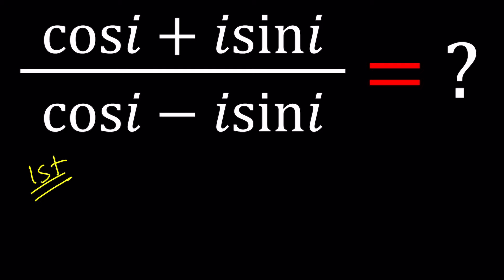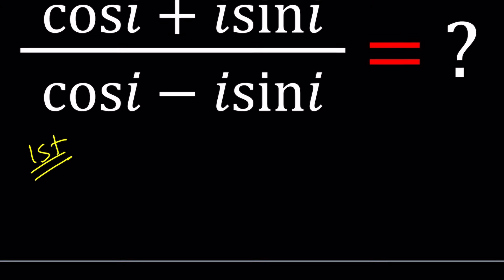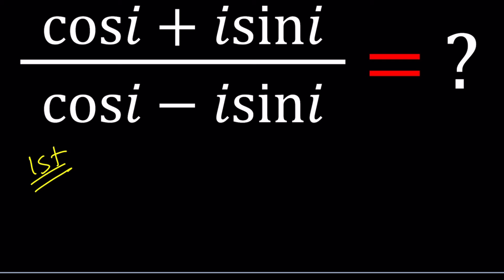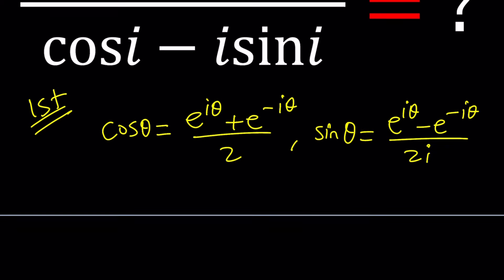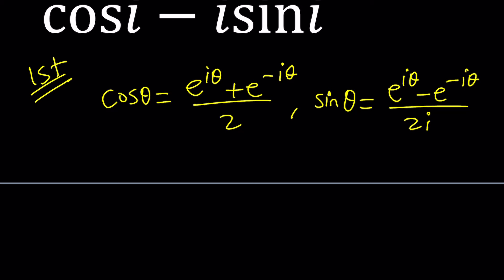So for my first method I'm going to use some identities. Hopefully you do remember from lecture notes, we talked about this and I've done quite a few problems. Cosine theta can be written as e to the i theta plus e to the negative i theta divided by 2, and sine theta can be written as e to the i theta minus e to the negative i theta divided by 2i. And some people are going to associate this with hyperbolic functions. But anyways, that's a different story.